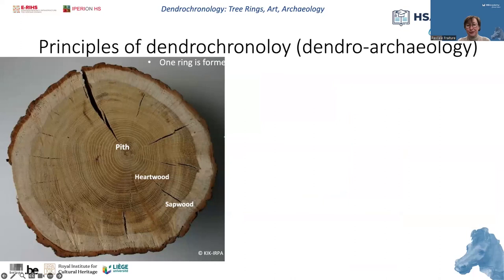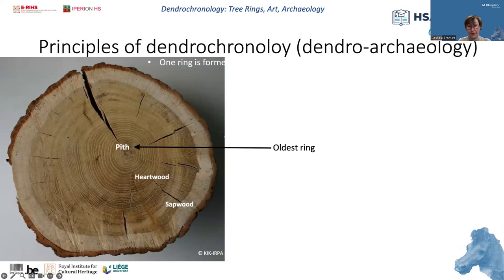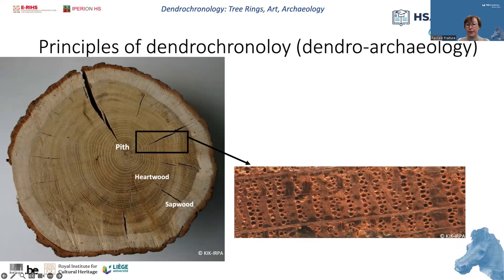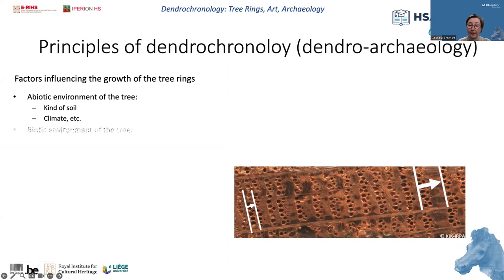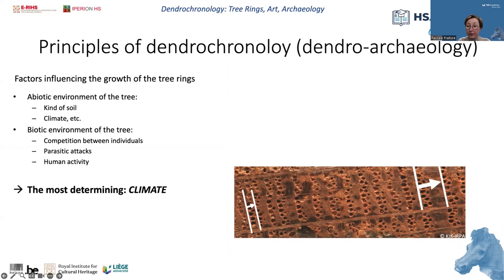For the basic principle of dating by tree rings — we are speaking about trees growing in a temperate climate such as in Western Europe, with contrasted vegetation seasons. In such a context, a tree such as oak produces one ring each year on the periphery of the trunk. The oldest rings are near the pith in the center of the trunk, and the most recent are just under the bark. As you can see on this detail of a transverse section of an oak tree, all rings do not have the same width. This is because many factors influence the growth of the tree, the most important being the climate.